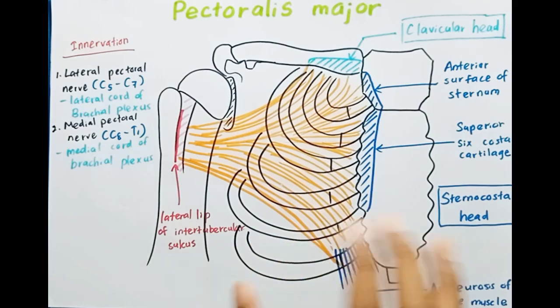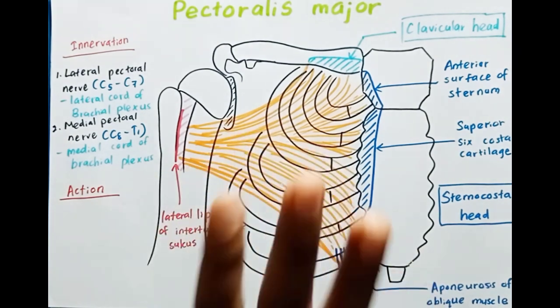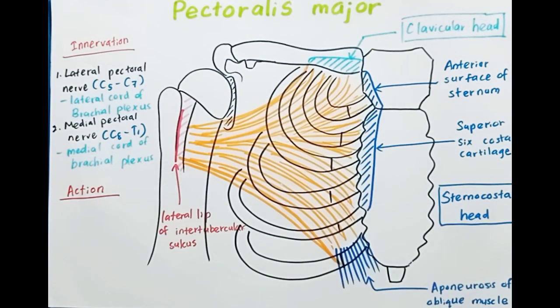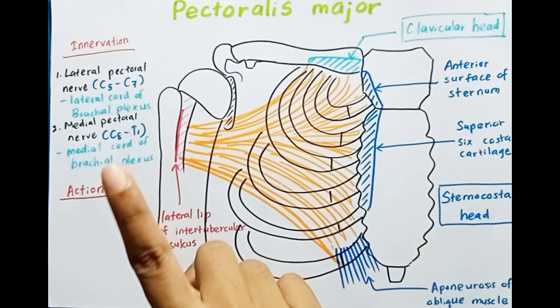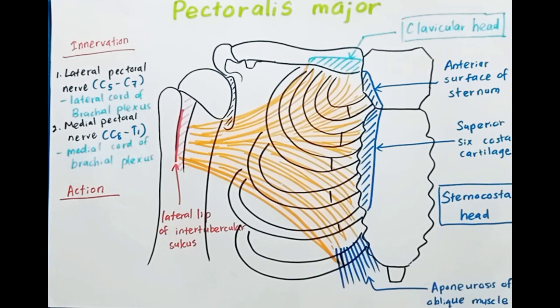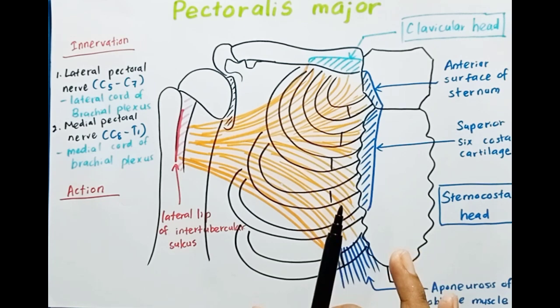Now let's talk about the actions of the pectoralis major. There are three main actions performed by this muscle: adduction and medial rotation of the humerus, flexion of the shoulder joint by the clavicular head, and depression by the costal cartilage.